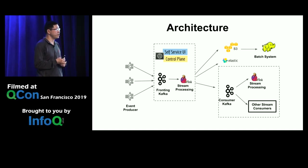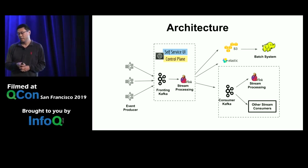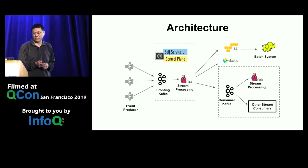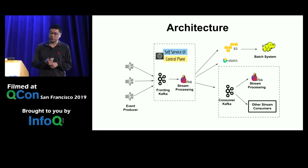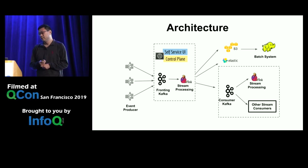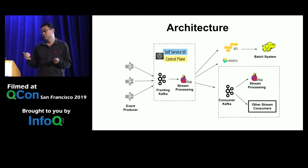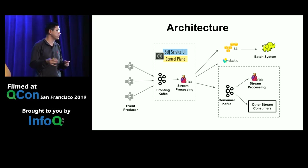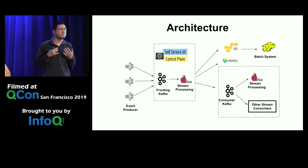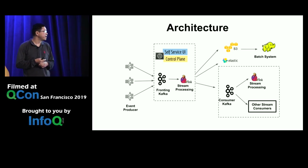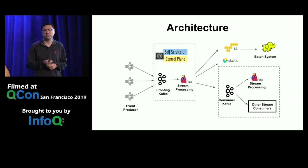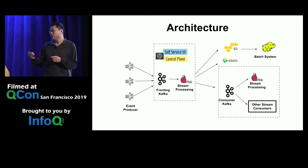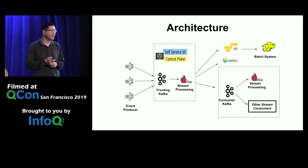To make sense of my talk, let me share the architecture of our streaming data infrastructure at Netflix. On the left side we have event producers, and they send events to a set of Kafka clusters called fronting Kafka clusters. We use Flink for stream processing. Once data gets into a fronting Kafka cluster, it is consumed by a set of stream processing jobs operating at the infrastructure level — also called routers — which do simple ETL like projection and filtering. Once the data is processed, it's sent to downstream sinks including S3, Elasticsearch, and another set of Kafka clusters called consumer Kafka clusters, where data is consumed by customers' stream processing jobs and other Kafka consumers.